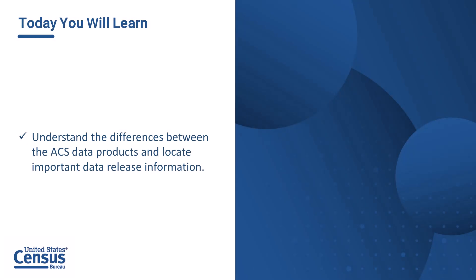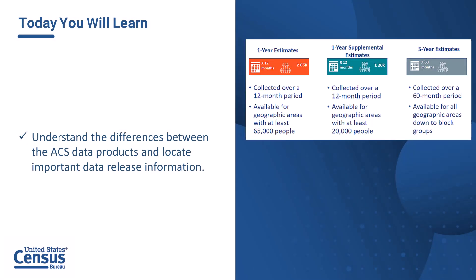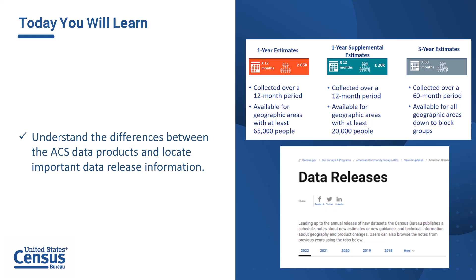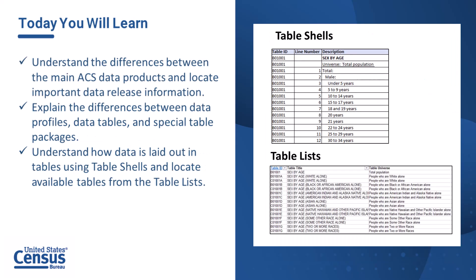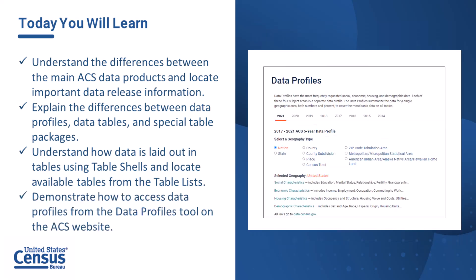After today's video, you'll be able to understand the differences between the main ACS data products and locate important data release information. Explain the differences between data profiles, data tables, and special packages. Understand how data is laid out in profiles or tables using table shells and identify what profiles or tables are available from the table lists. And finally, demonstrate how to access data profiles from the data profiles tool on the ACS website.